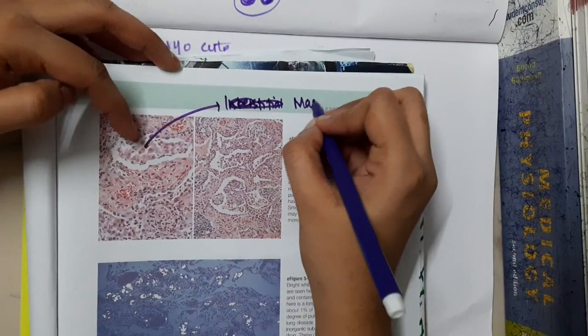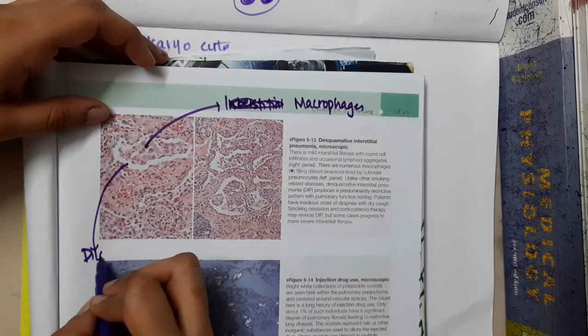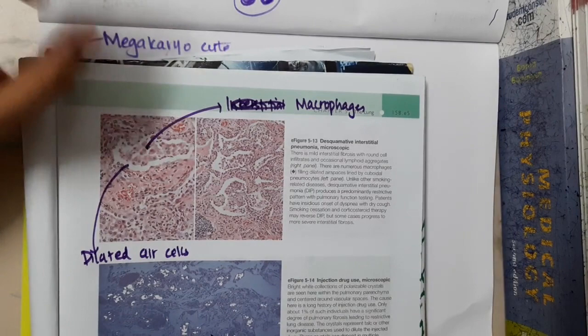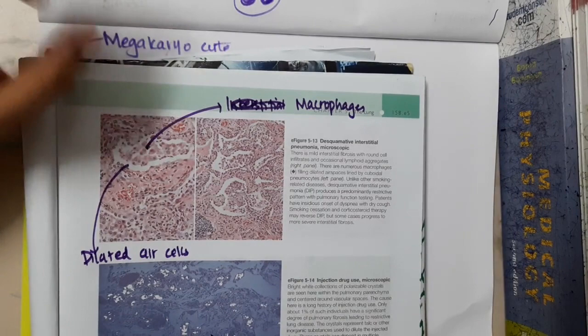Here you are seeing many macrophages are present. These are the macrophages which you see in dilated air spaces. These are the dilated air spaces with macrophages which will ingest the smoked particle. It is most commonly seen in smoking. This is DIP — Desquamative Interstitial Pneumonia.